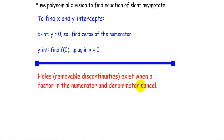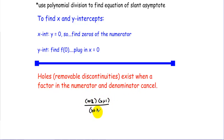For example, if we have (x + 2)(x + 1) in the numerator and (x + 2) in the denominator, there would be a hole where x = -2. The hole occurs at the x-value that makes the canceled factor equal to zero.